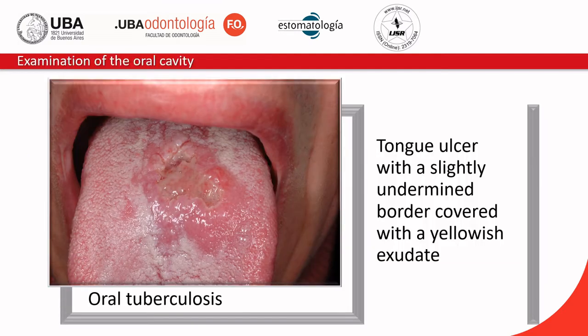Examination of the oral cavity revealed the presence of a painful single ulcer covered with yellowish exudate, with irregular contours and indurated to touch on the dorsal surface of the tongue. No other oral mucosa lesions were observed. Physical examination showed multiple small submandibular lymphadenopathies on both sides of the upper neck.